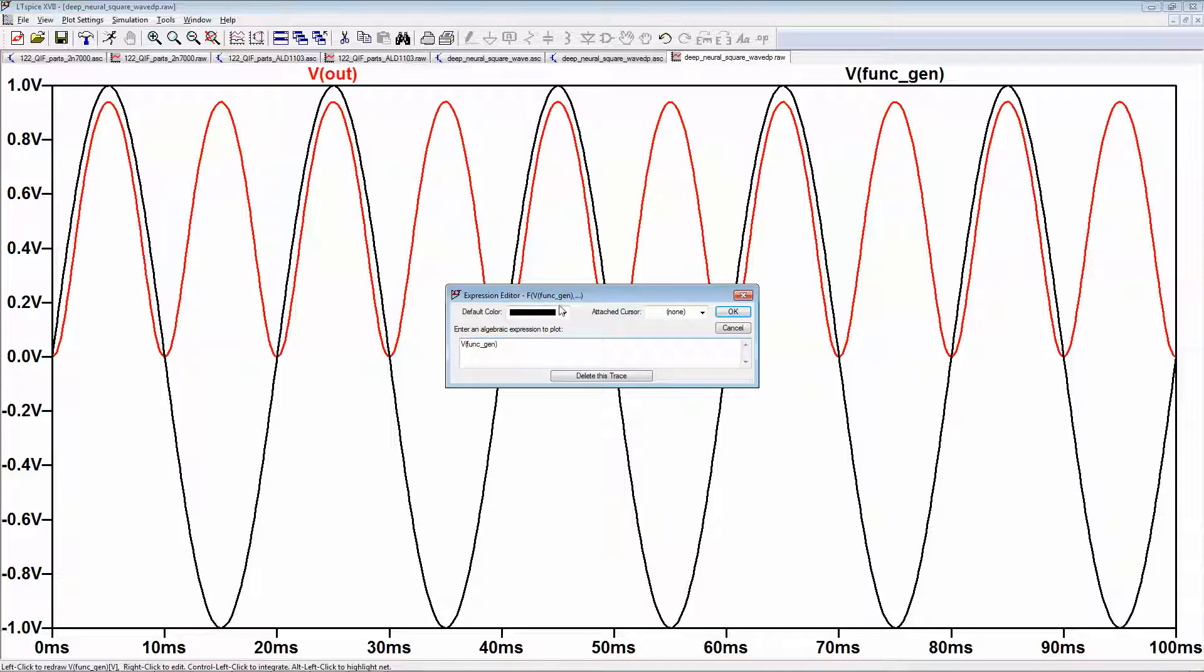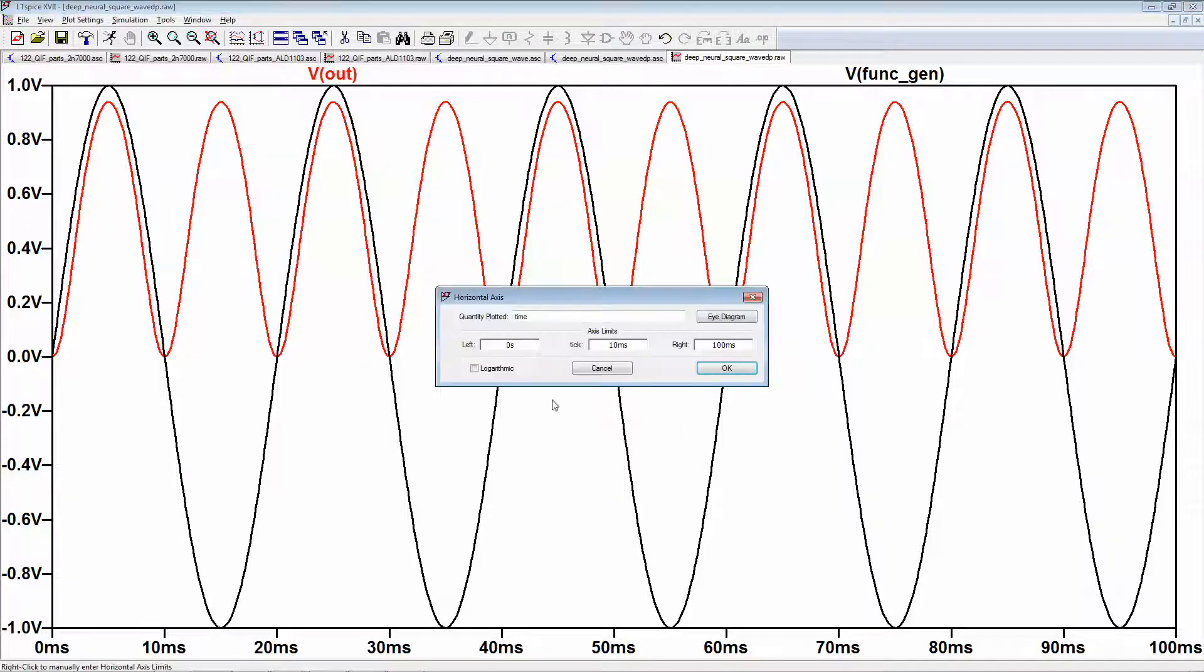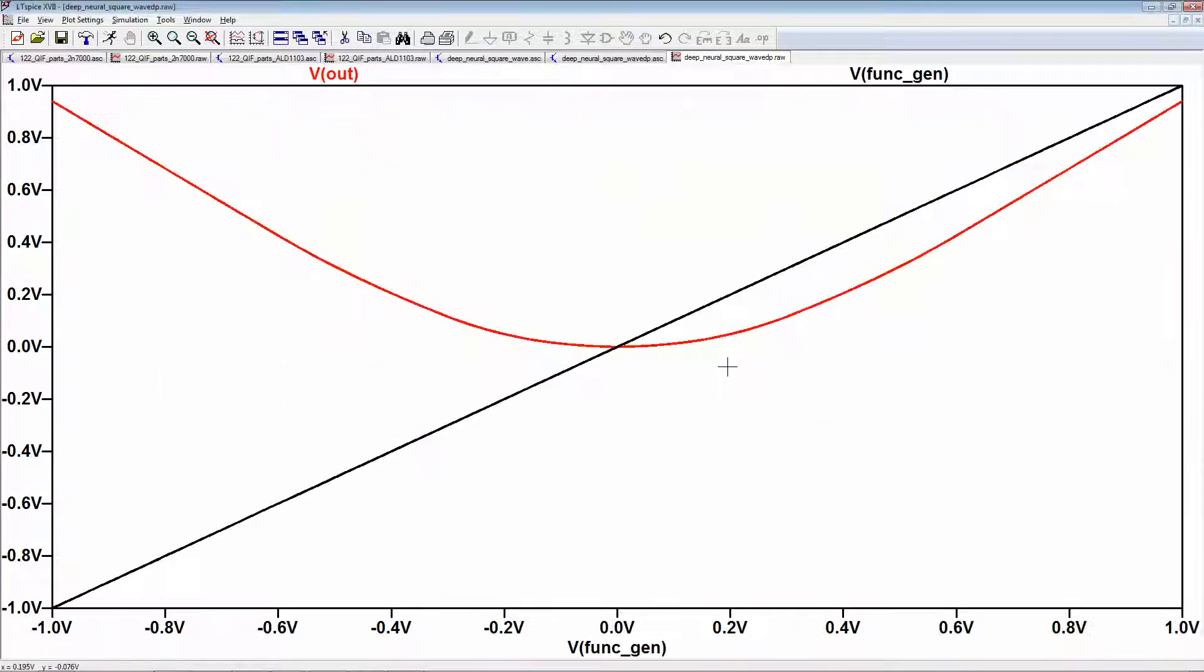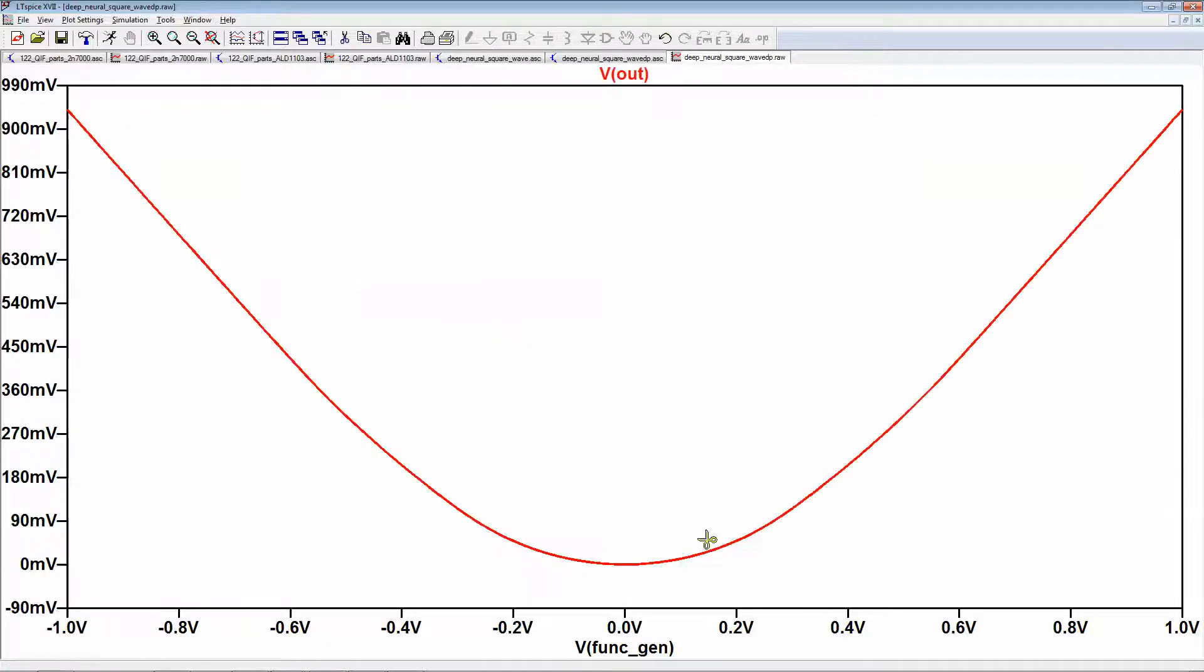But really the big test will be if we do, like on an oscilloscope, what's called an XY plot and plot versus the input. Alright, there's a straight line. And there's x squared, or is it? Now this looks square, but notice how it's starting to look linear there.